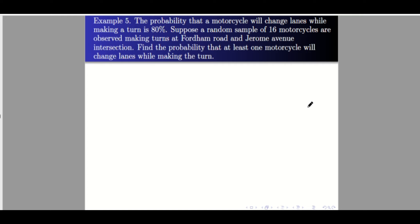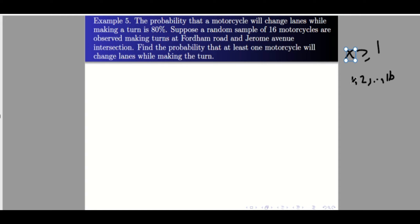Example five: The probability that a motorcycle will change lanes while making a turn is 80%. Suppose a random sample of 16 motorcycles are observed making turns at Fordham Road and Jerome Avenue intersection. Find the probability that at least one motorcycle will change lanes. Note: 'at least one' means x greater than or equal to 1, so x ranges from 1 to 16 — which is very long to solve.